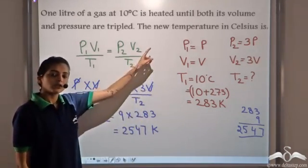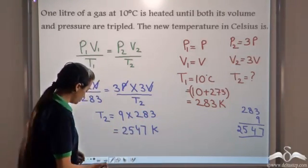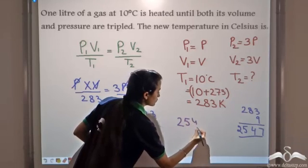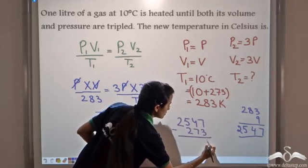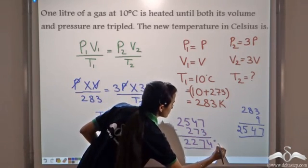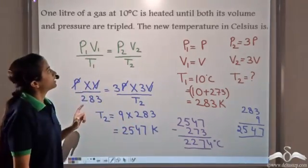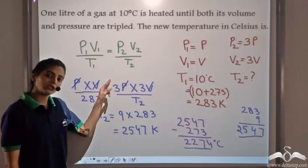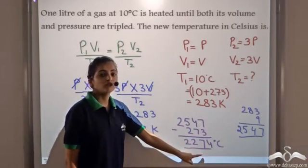But we need the answer in Celsius. To convert from Kelvin to Celsius, we subtract 273. So 2547 minus 273 gives 2274 degrees Celsius. Therefore, when one litre of a gas at 10 degrees Celsius is heated until both its volume and pressure are tripled, the final temperature is 2274 degrees Celsius.